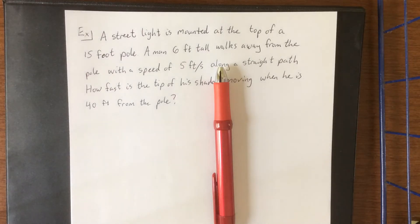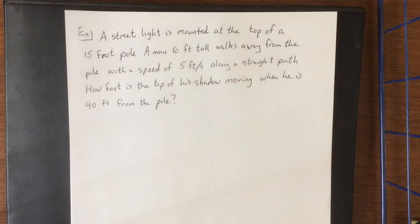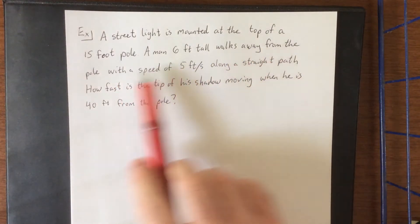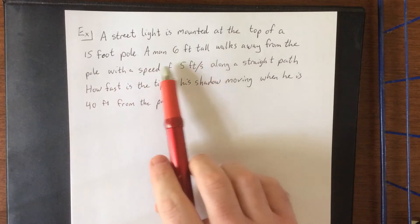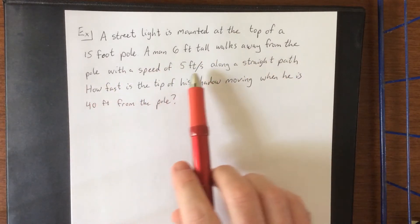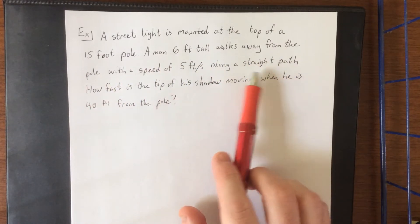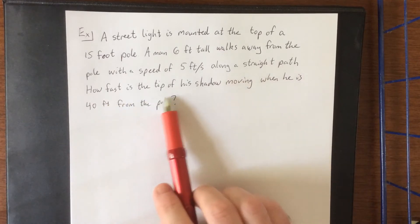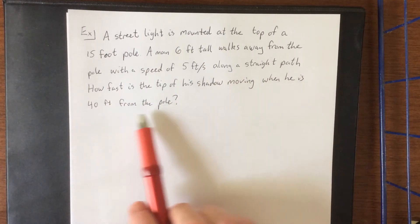In this example, we're going to check out a related rates problem. So first thing we'll do is read the problem. A street light is mounted at the top of a 15-foot pole. A man 6 feet tall walks away from the pole with a speed of 5 feet per second along a straight path. How fast is the tip of his shadow moving when he is 40 feet from the pole?